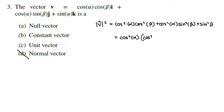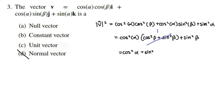So we look at the magnitude squared: cos²α cos²β + cos²α sin²β + sin²α. Factoring out cos²α gives cos²α(cos²β + sin²β) + sin²α. By the Pythagorean identity, cos²β + sin²β = 1, simplifying to cos²α + sin²α, which equals 1 again by Pythagorean identity. The magnitude is 1, so it is a unit vector — and being a unit vector, it is also constant in magnitude.